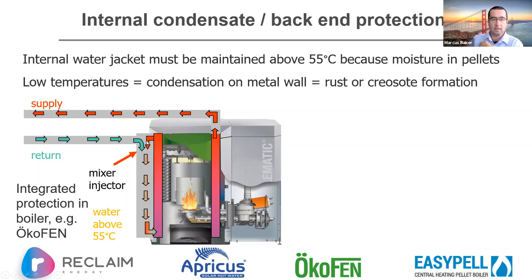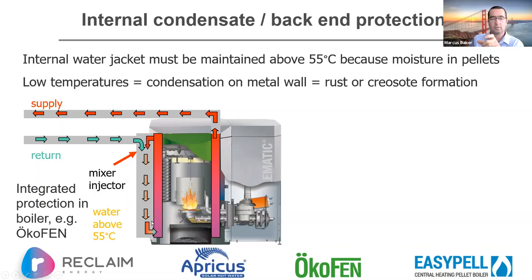The Ökofen boiler has an injector mixer — returning water is injected back in via an automatic varying mixer. When first starting with much more cold than hot water, a small amount is injected in; as the returning water increases in temperature, more is released until it's complete flow above 55 degrees returning water.